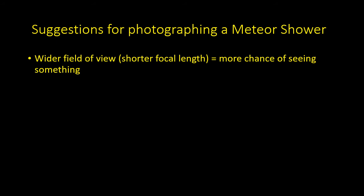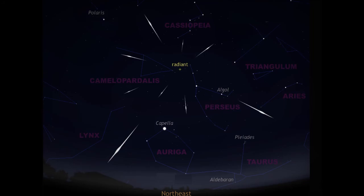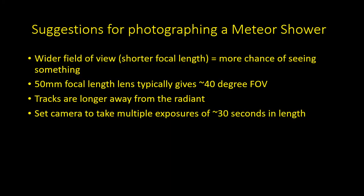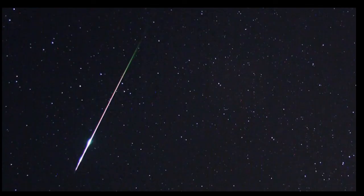When photographing meteor showers, you want a camera with a short focal length lens giving a wide field of view — a 50mm focal length lens typically gives about a 40-degree field of view. Note that meteor tracks are actually longer the further you point from the radiant. Set the camera to take multiple short exposures of around 30 seconds each; most won't contain a meteor, but some will. You could also use a simple smartphone app such as Nightcap, available on iPhone. Most importantly, once again: patience.